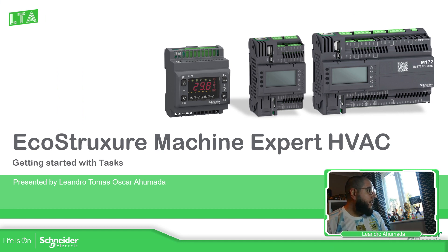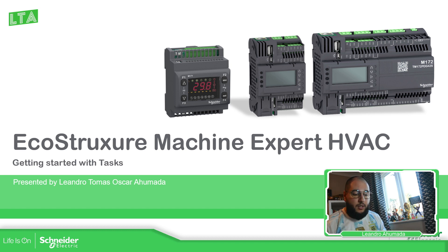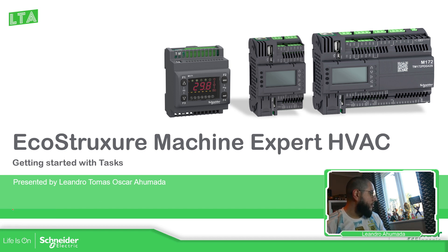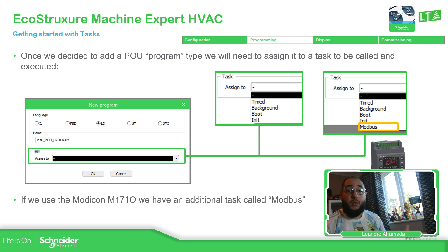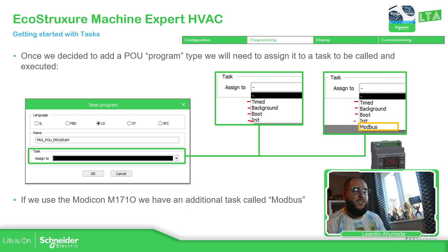Inside the controller, whether it's the M172 Performance Optimize or M171, we have different tasks. The tasks are the place where we put our POUs programs to run. On the M172 we have: time, background, boot, and init. On the M171 Optimize we have the same tasks, but we also have one specific task for Modbus — which is where we call the Modbus function to be executed on the M171 Optimize.